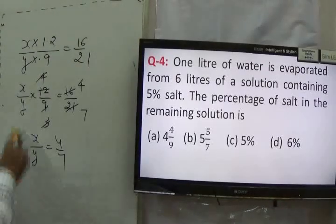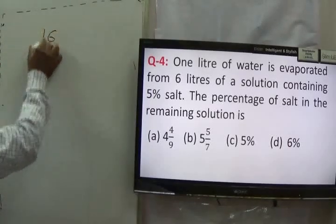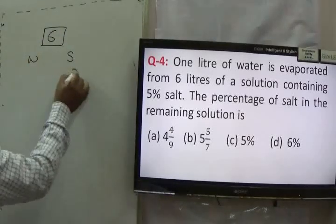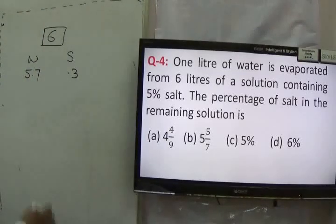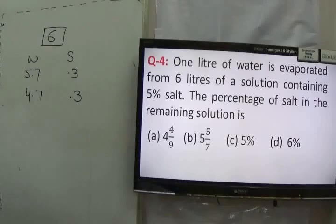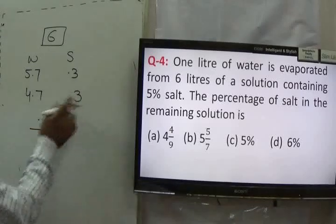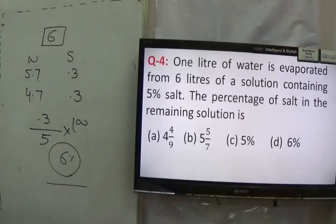Next, statement number 4. It is given that 1 liter of water is evaporated from 6 liters of solution containing 5% salt. My total solution was 6 liters containing 5% salt — that is 0.3 liters of salt and 5.7 liters of water. After 1 liter of water evaporates, water left is 4.7 and salt is 0.3. The total solution is now 5 liters. Percentage of salt in remaining solution is 0.3 upon 5 into 100 = 6%. Answer is 6%.